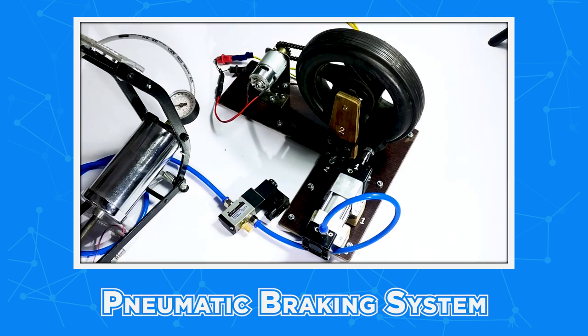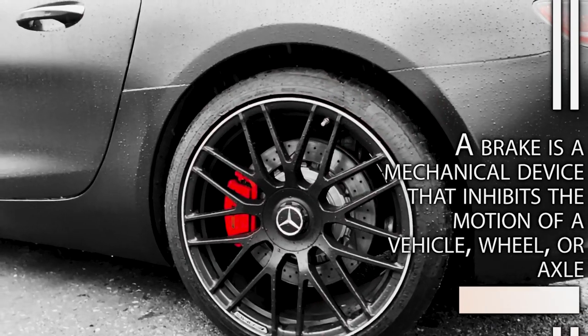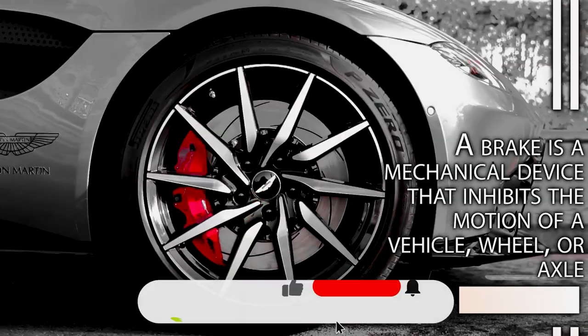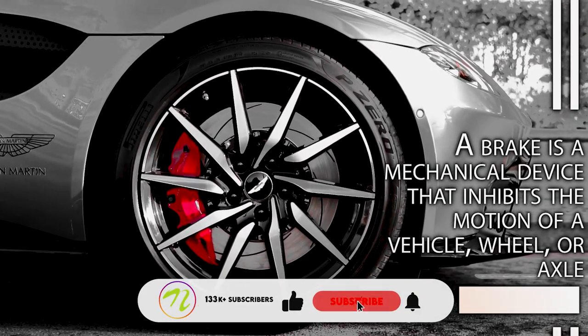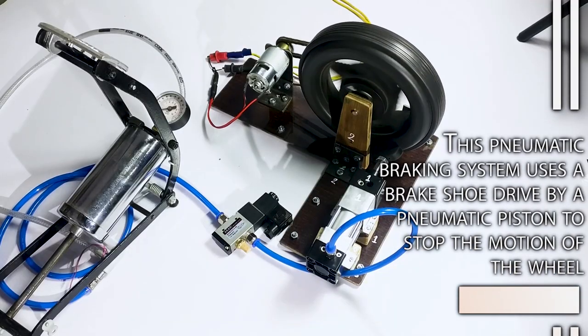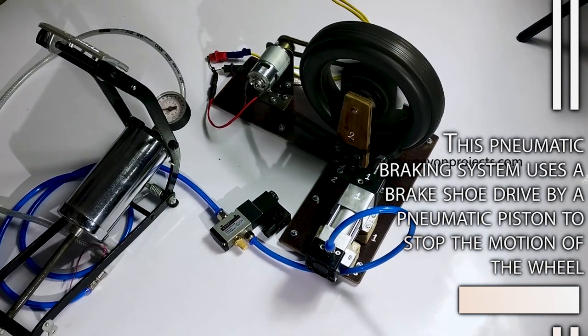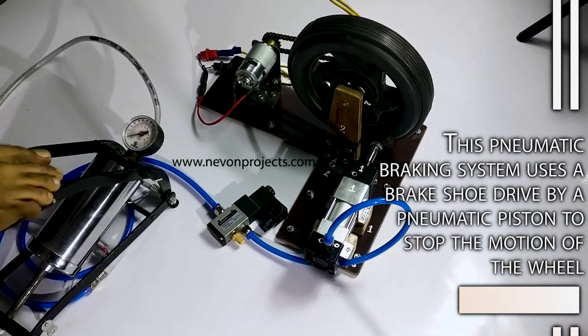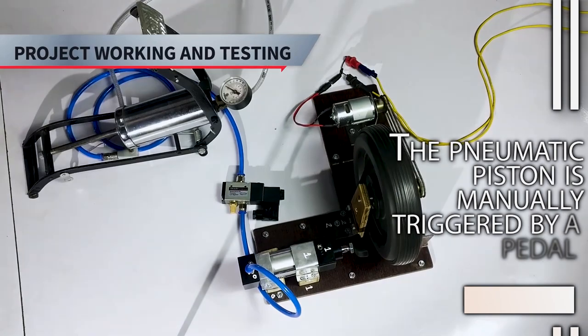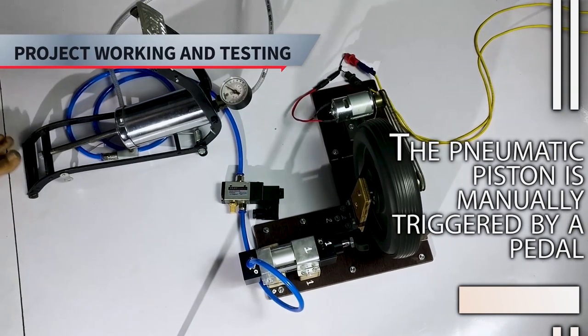Pneumatic braking system. A brake is a mechanical device that inhibits the motion of a vehicle, wheel, or axle. This pneumatic braking system uses a brake shoe driven by a pneumatic piston to stop the motion of the wheel. The pneumatic piston is manually triggered by a pedal.